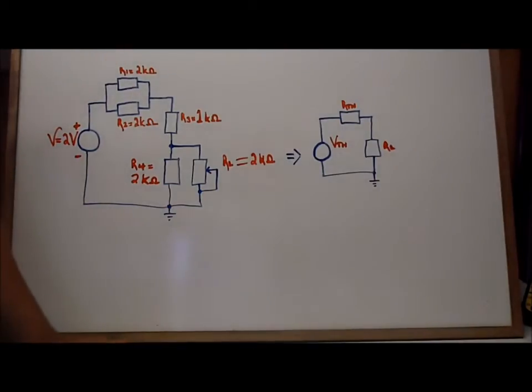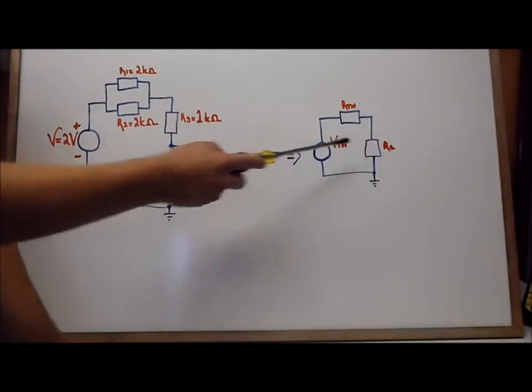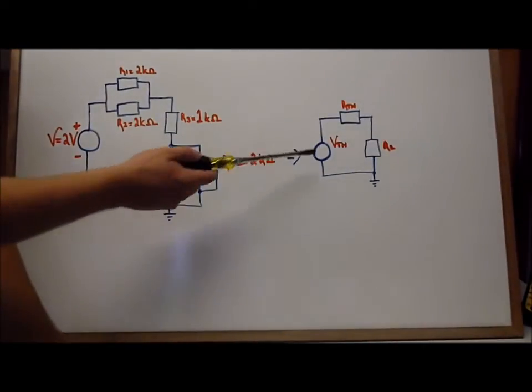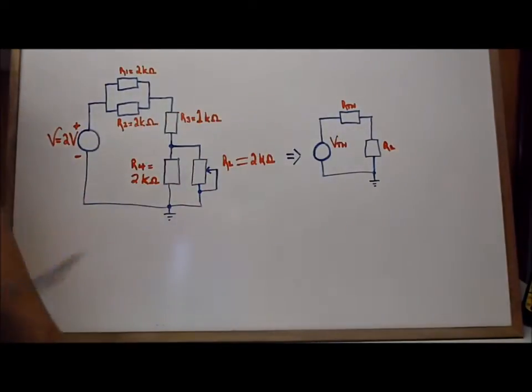In order to use this tool to actually determine what's happening at our load, we have to determine two constants in the circuit and they are called Thevenin's voltage and Thevenin's resistance. So let's actually go in and figure out how to calculate these, and once we have those values it's going to be really easy to determine what's occurring at RL.